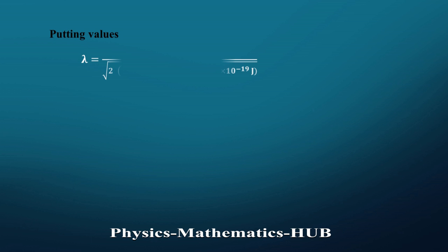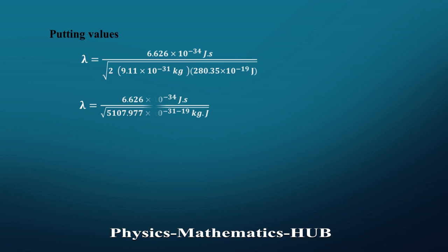Putting in the values: λ = h / √(2 × mₑ × KE). In the denominator, we multiply 2 with 9.11, then multiply by 280.35, combining the powers of 10. Further simplification gives 107.977 × 10⁻⁵⁰ kilogram joule.